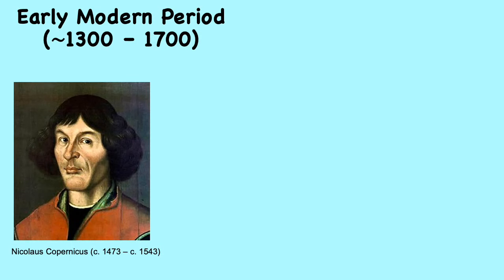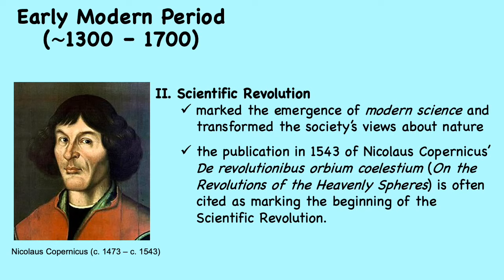This is a portrait of Nicolaus Copernicus, and he was often recognized as the one who sparked the Scientific Revolution. The Scientific Revolution was the emergence of modern science during the early modern period, when developments in mathematics, physics, astronomy, biology, and chemistry transformed societal views about nature. The Scientific Revolution began in Europe toward the end of the Renaissance period and continued through the late 18th century, influencing the intellectual and social movement known as the Enlightenment. Most historians believe that the publication in 1543 of Nicolaus Copernicus' De Revolutionibus Orbium Coelestium, or On the Revolutions of the Heavenly Spheres, marked the beginning of the Scientific Revolution. We shall discuss the Scientific Revolution in more detail in the next lesson.